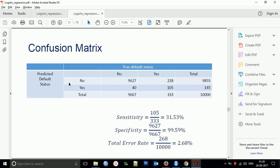The confusion matrix shows predicted default status (no/yes) versus true default status (no/yes). We have 9,627 correct no predictions, 105 correct yes predictions, 228 false positives, and 40 false negatives. This is called sensitivity and specificity. Sensitivity is 105 divided by total actual yes, giving 31%. Specificity is 9,627 divided by total actual no, giving 99.59%. The total error rate comes from 228 plus 40.